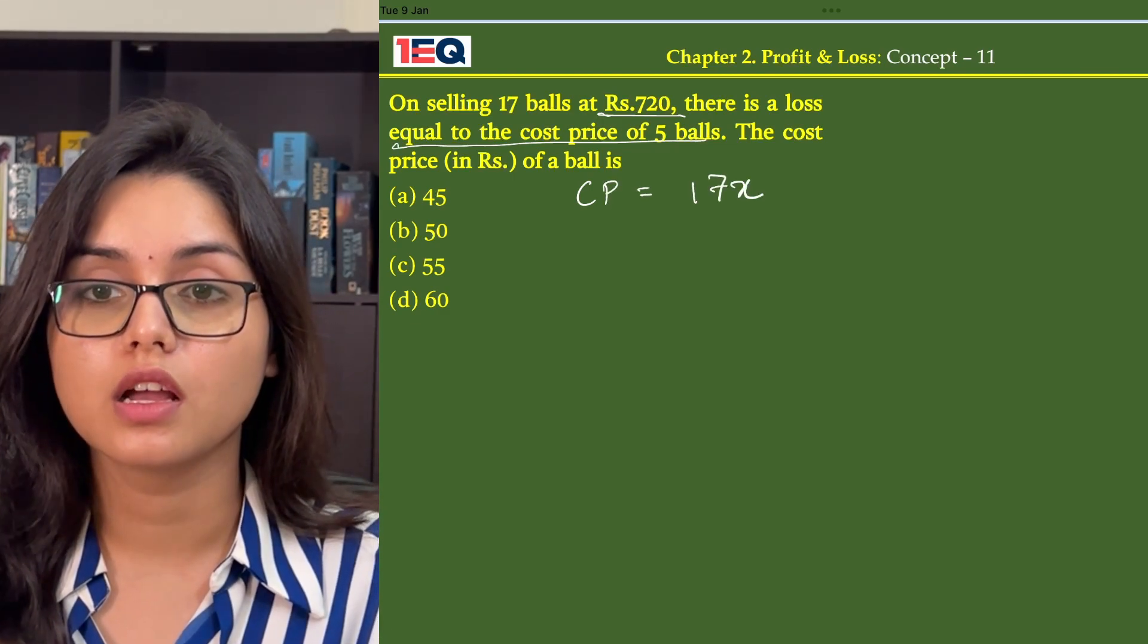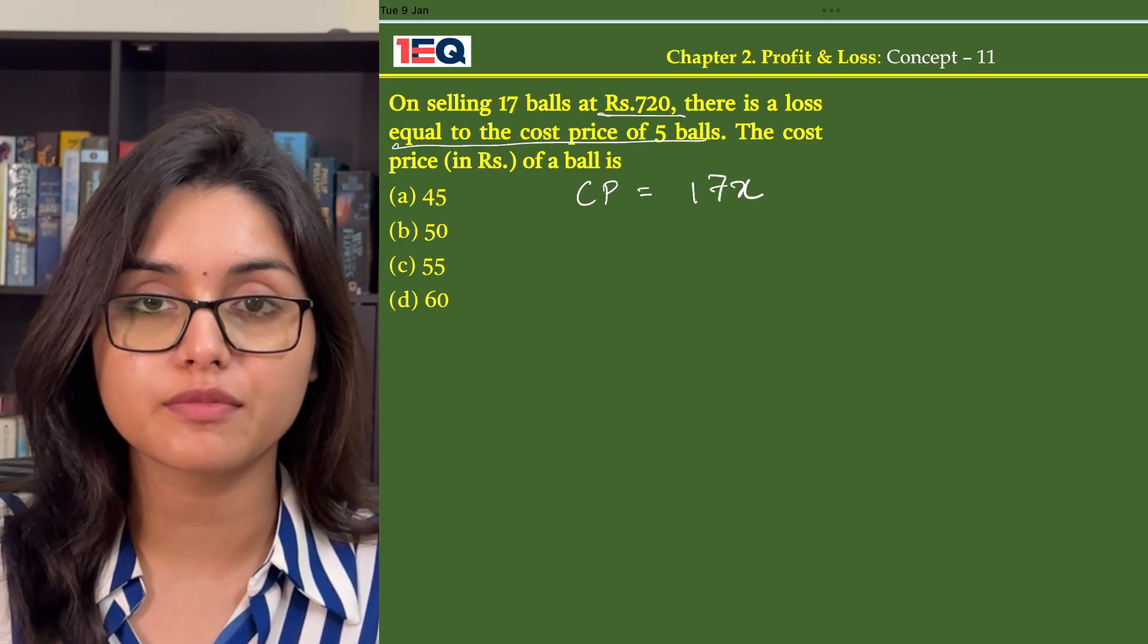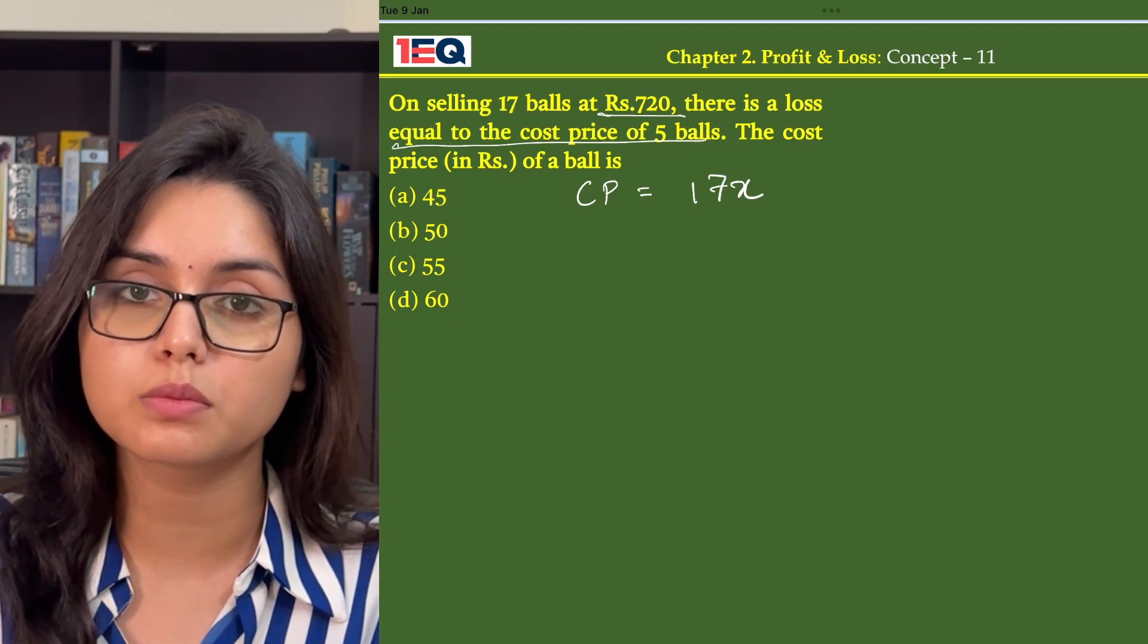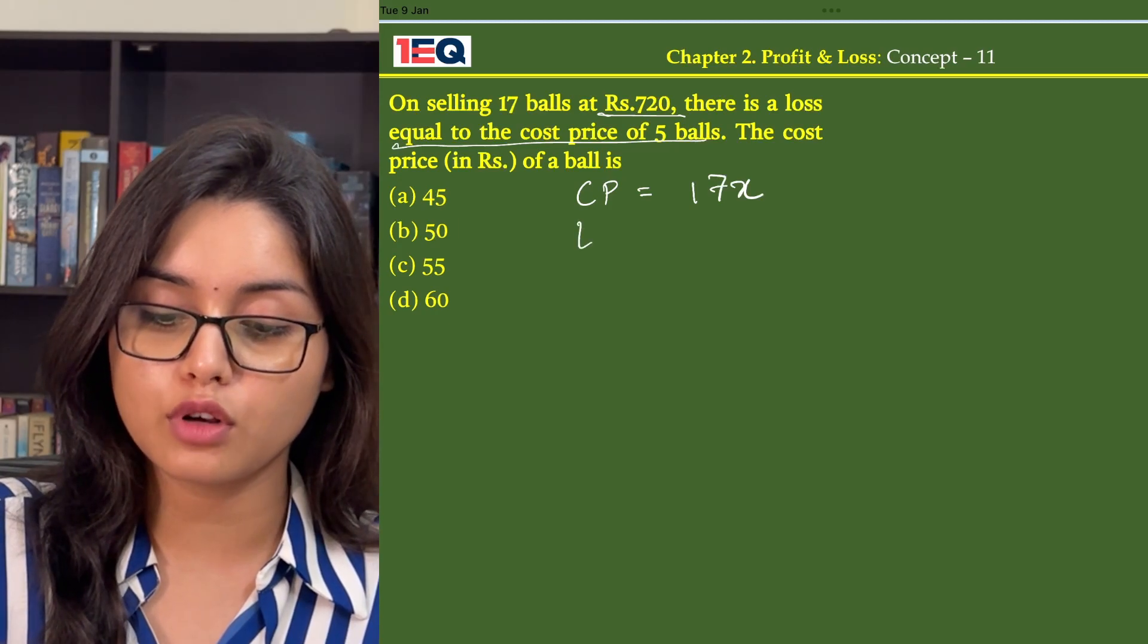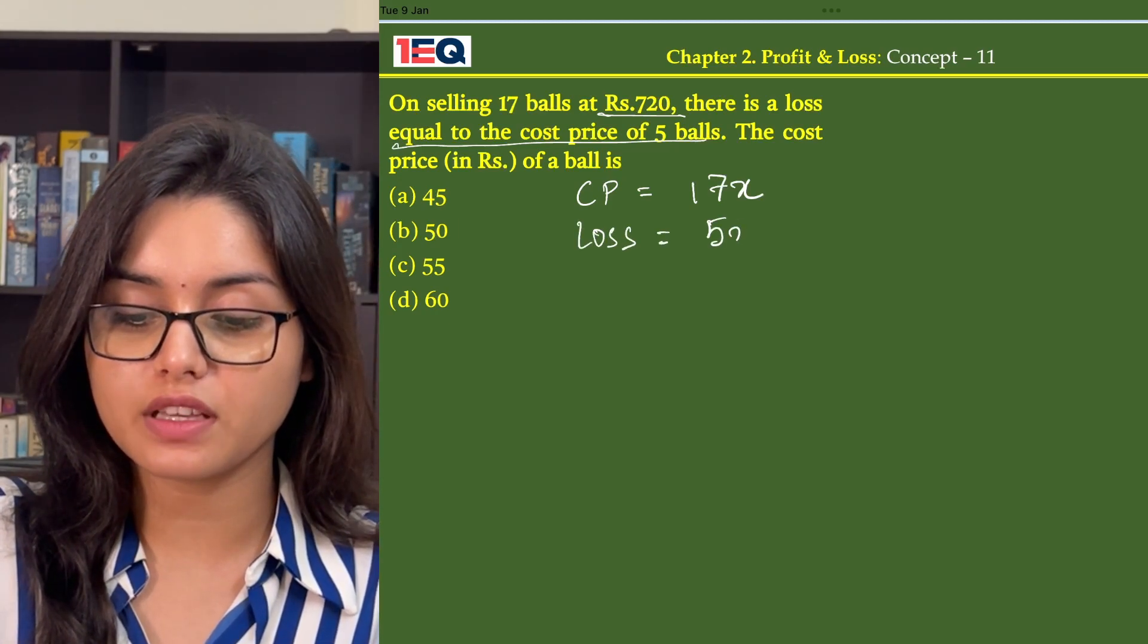Now there was a loss equal to the cost price of 5 balls. So the cost price of 5 balls will be 5x and therefore loss is equal to 5x.